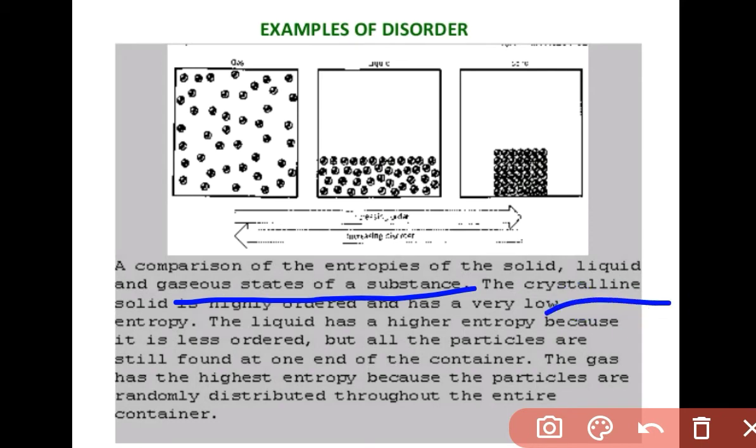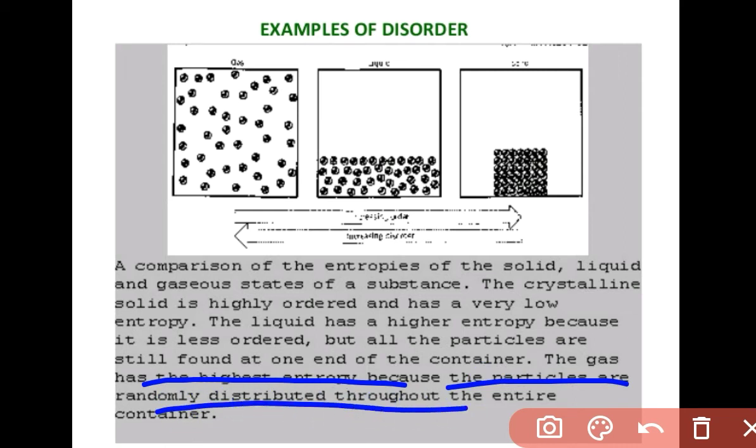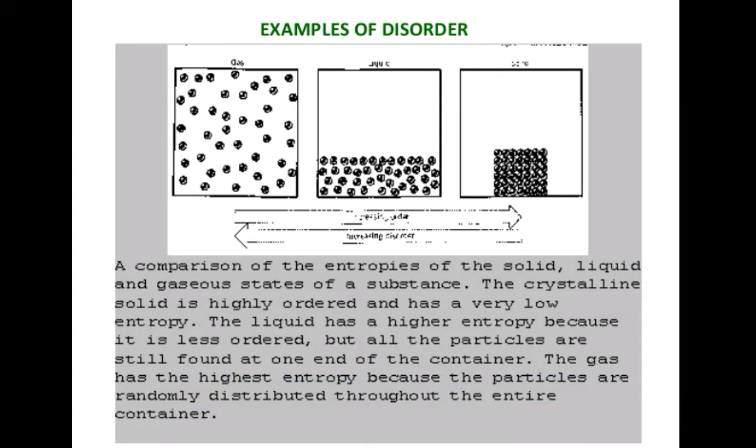In a crystalline solid state of a substance, the solid is highly ordered and has very low entropy because its disorderedness is low. The liquid has higher entropy because it is less ordered, but all particles are still found at one end of the container. The gas has the highest entropy because the particles are randomly distributed throughout the entire container.